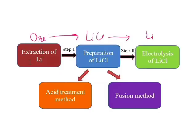In summary, lithium is extracted from spodumene ore in two main steps: first, the preparation of LiCl — achieved by either the acid treatment method or the fusion method — and second, the electrolysis of LiCl to yield lithium metal. This is the complete extraction method for lithium from its ore.